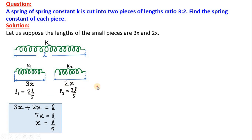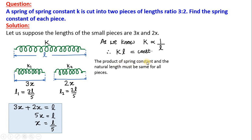After obtaining the length of the two springs, we know that the spring constant is inversely proportional to the length of the springs. Or we can say K multiplied by L must be a constant. That means, the product of the spring constant and the natural length, K into L must be same or constant for all the three pieces because all these three pieces are made from the same material. So, their product must also be the same constant.